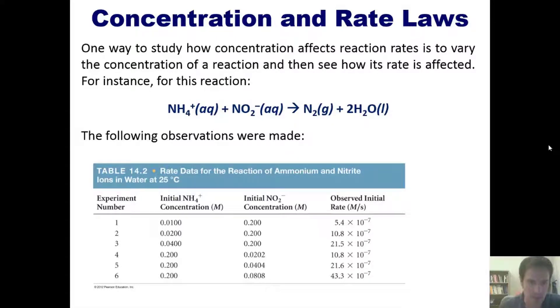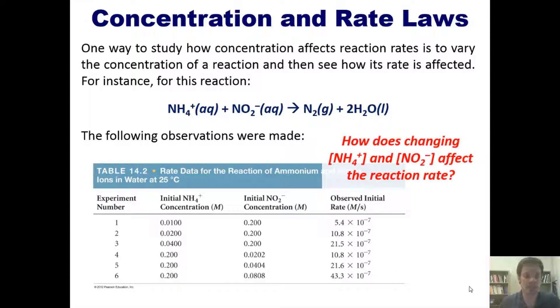Woo, that's a crazy table! Now you should notice in this table that they varied the initial concentrations of these reactants. In experiments 1, 2, and 3, they kept the concentrations of NO2- constant while varying the concentration of ammonium, and then they observed what happened to the rate or speed of the reaction. In experiments 4, 5, and 6, they did the opposite, keeping ammonium's concentration constant while varying the concentration of nitrogen dioxide. They then observed how that affected the overall rate or speed of the reaction. So how does changing the concentrations of these two reactants, ammonium and nitrogen dioxide, affect the reaction rate? That's really the question we're trying to get at.